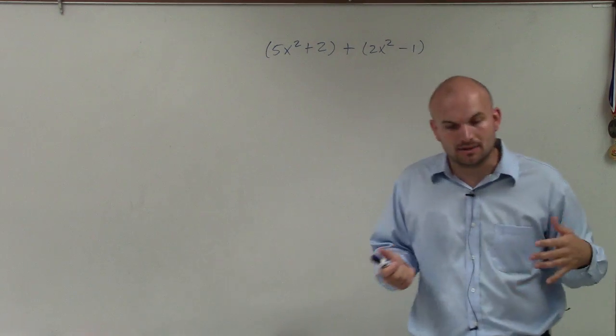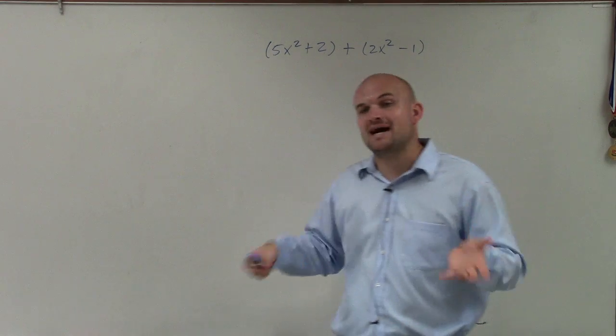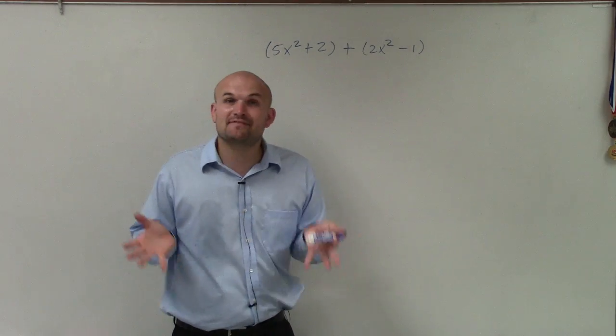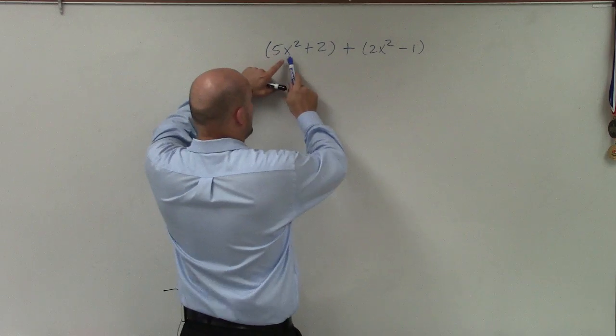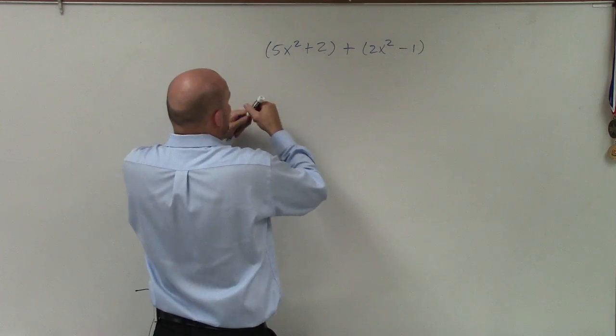Now, when we're adding, subtracting, or combining, we want to make sure we can only combine like terms. And what we mean by like terms is that they have the same variable factors. So you can see here, I have x squared and I have x squared. So these two terms, I can combine.